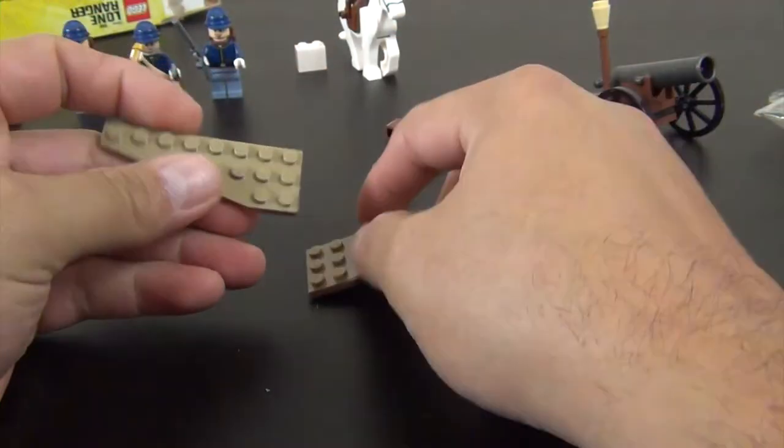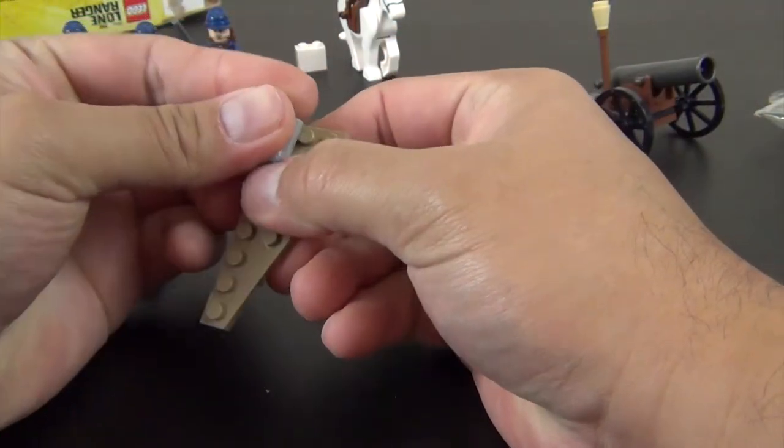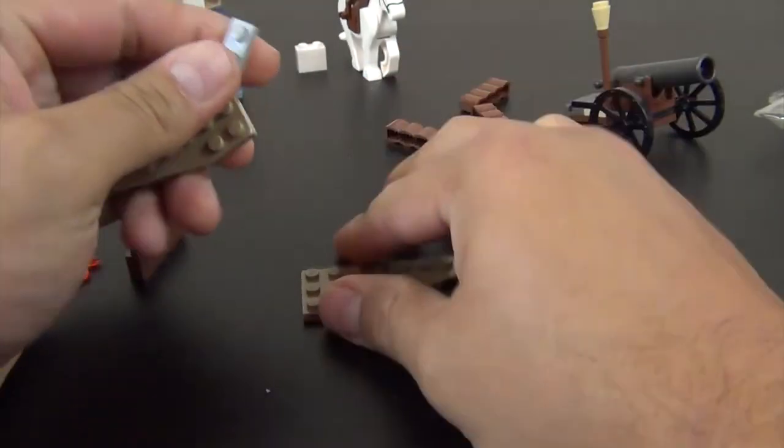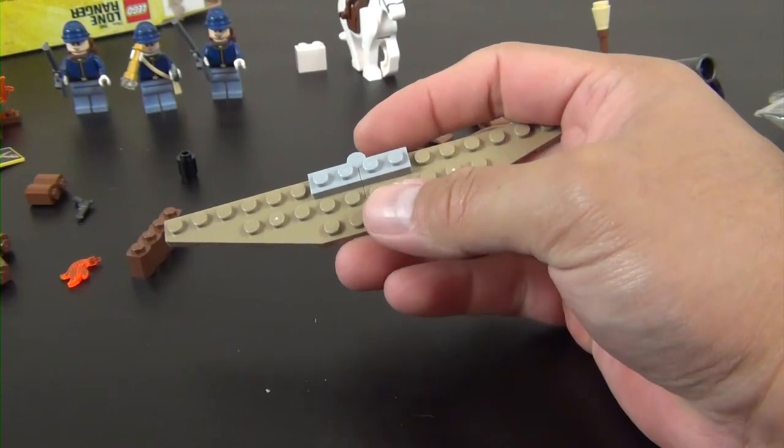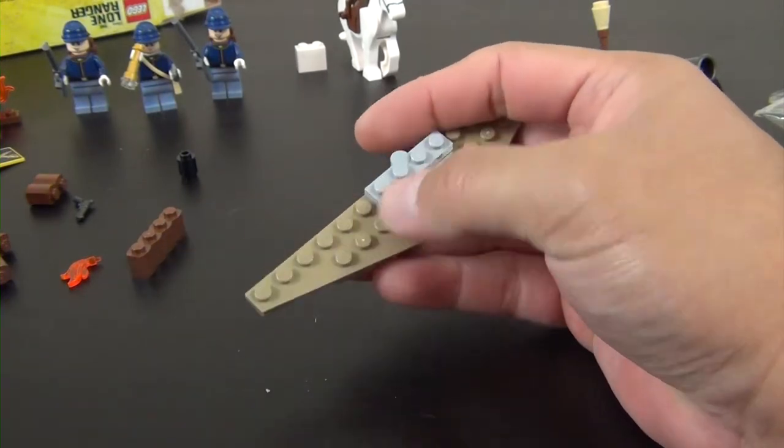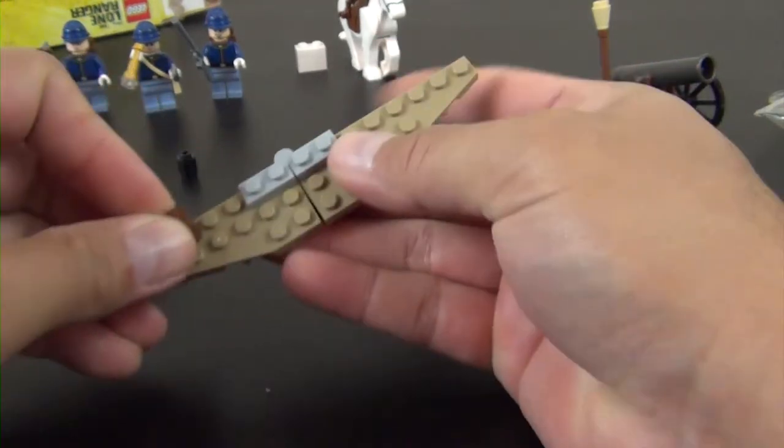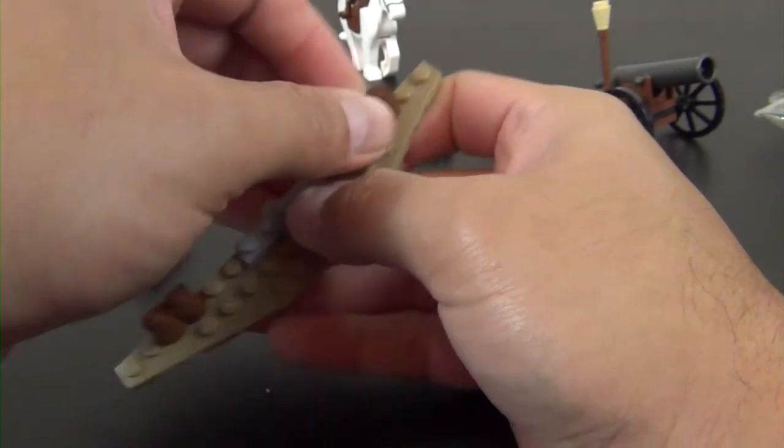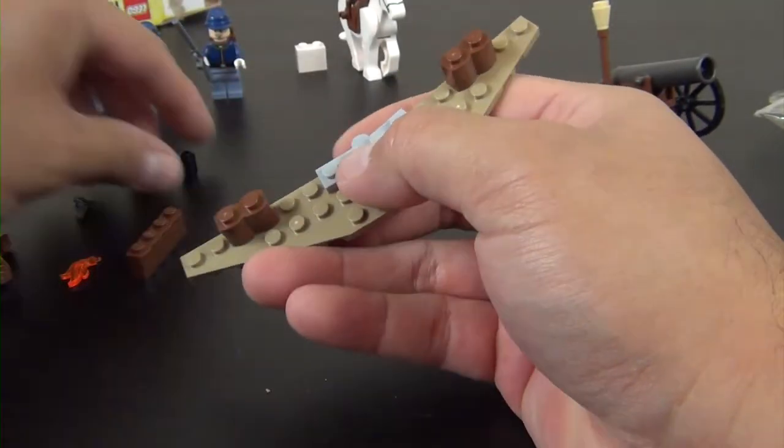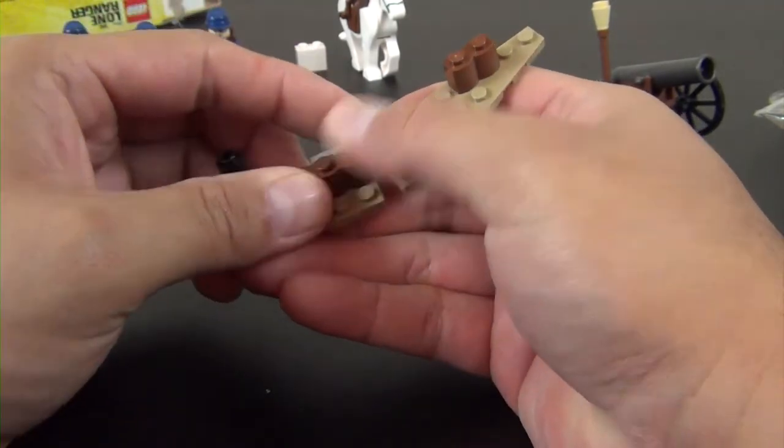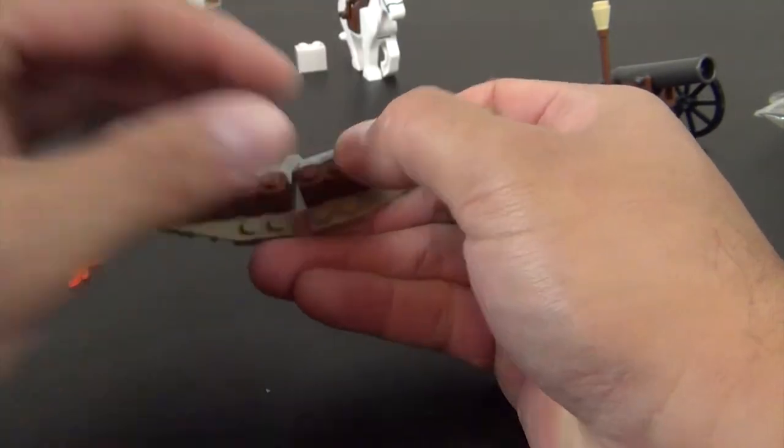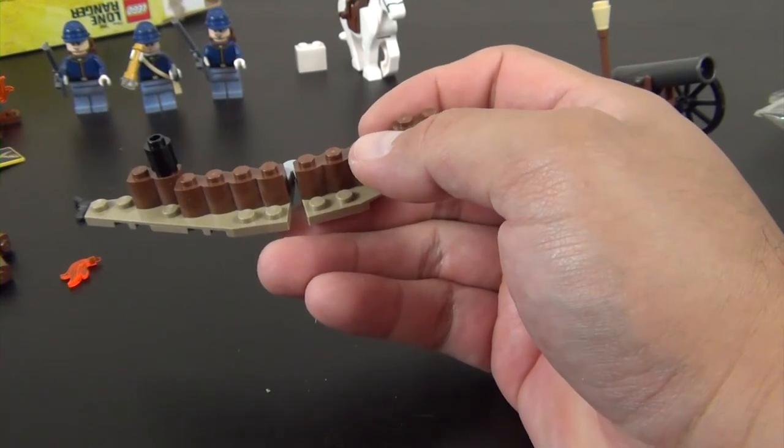Okay, next and last little accessory piece is like a little wall of some sorts. Another cannon piece there, so that one by one round wasn't an extra one, it was meant for this piece.